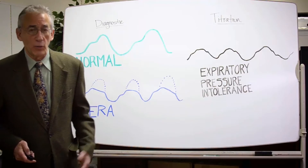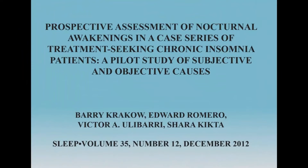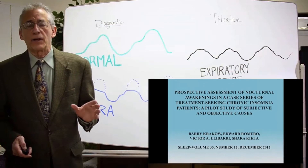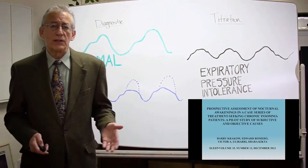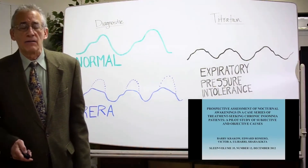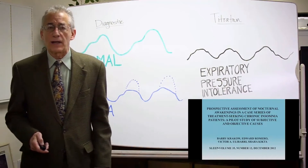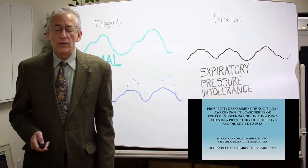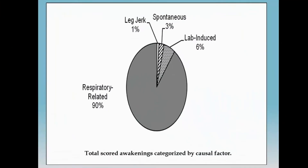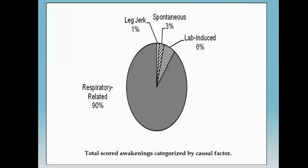Another study we did more recently looked at prospective evaluations of patients complaining of insomnia who were trying to figure out why they were waking up at night. This type of research had not been done previously, and with these 20 individuals, we asked them for their explanations. Virtually all of them gave non-breathing-related explanations — mostly psychological factors, perhaps other physical factors such as noise and temperature. But it turns out that when we put them in the lab for a diagnostic study, 90% of their awakenings were preceded by a respiratory-related event: an apnea, a hypopnea, or a flow limitation event.